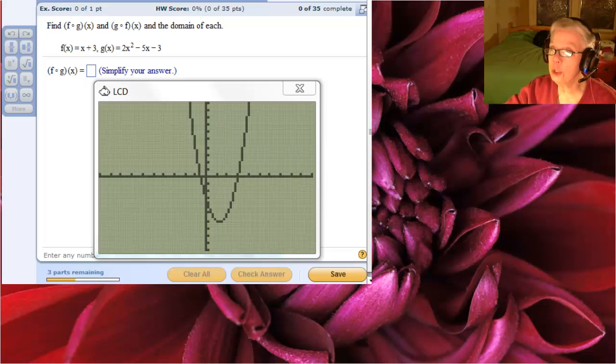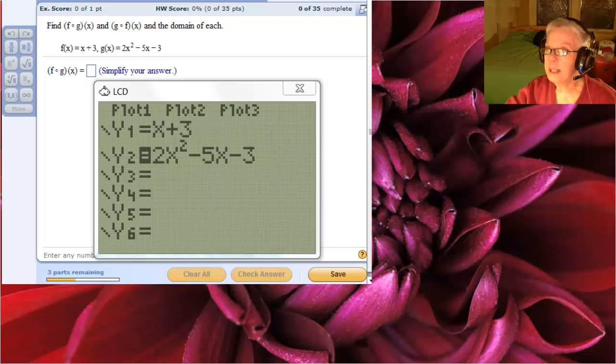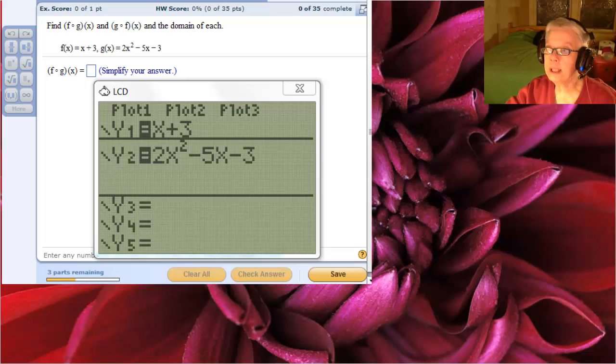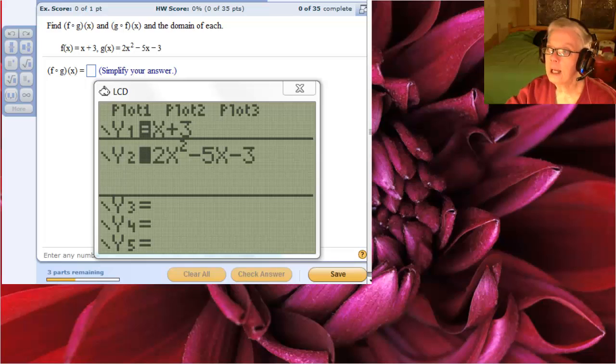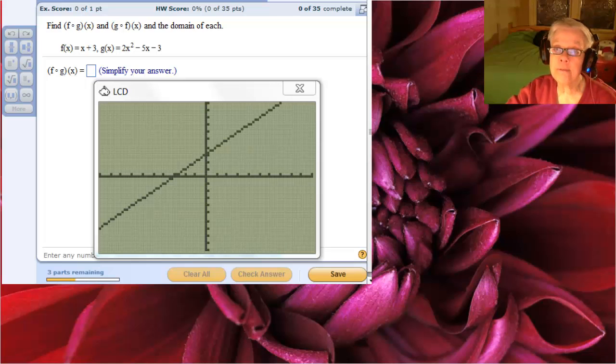Let's look at the other function. Go back to y equals and I'll go over to the equal sign on y1 and hit enter. That turns it back on. Then I'll come directly down to the equal sign on y2, hit enter. That turns it off. And I'll graph. This is the line y equals x plus 3, which is f of x. This definitely goes to the right forever and to the left forever. So the domain of this is also negative infinity to positive infinity.